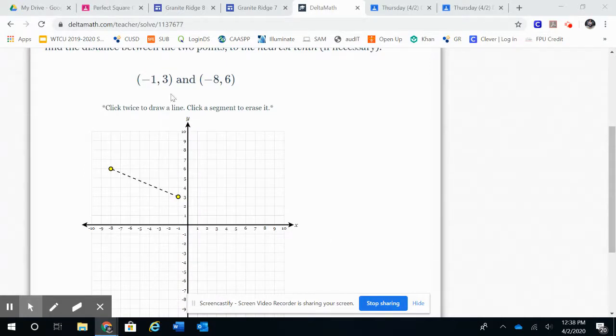They give you two points here, so I have negative one, three and negative eight, six. It says click twice to draw a line, click a segment to erase it.